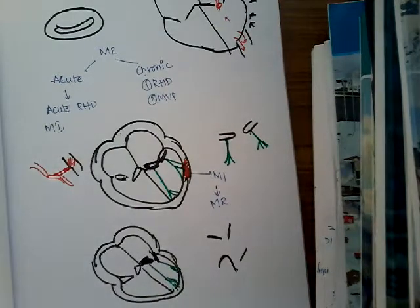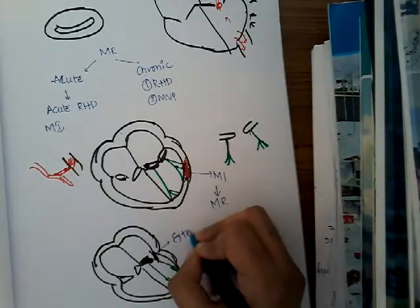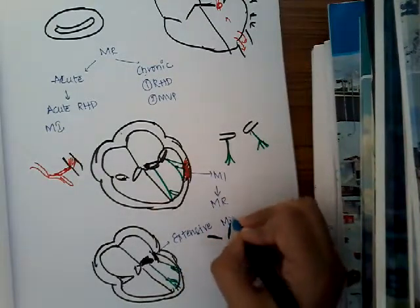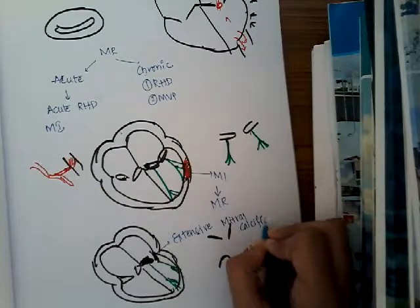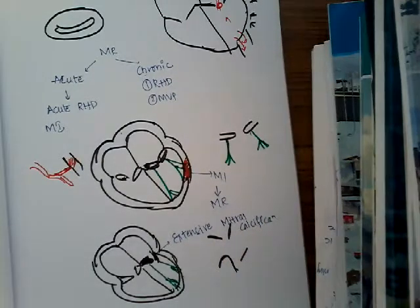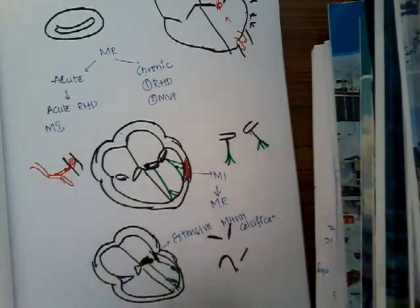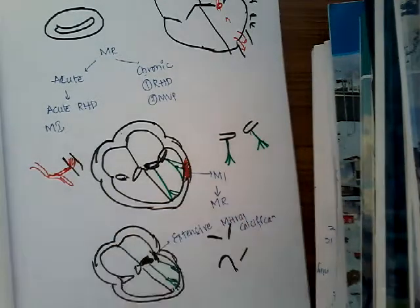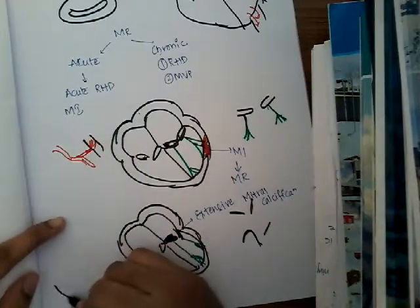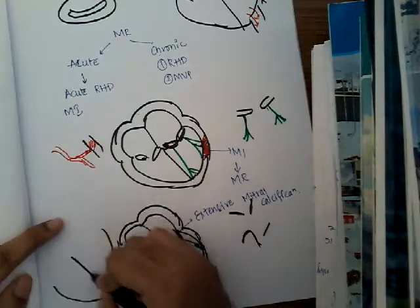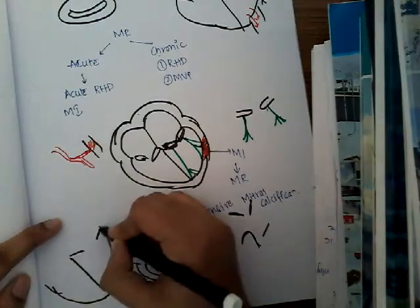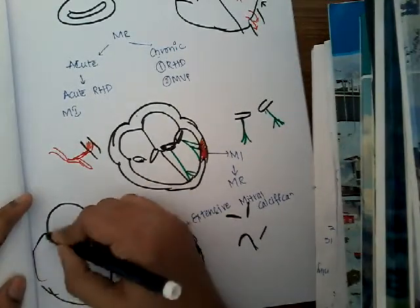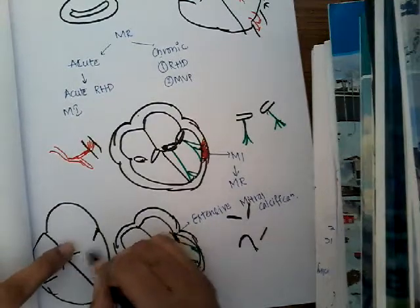Another chronic cause is extensive mitral valve calcification. When the mitral valve is completely calcified it cannot move, so it cannot close properly — this is one cause of mitral regurgitation. Additionally, dilatation of the ventricles can dilate the mitral valve opening, also resulting in mitral regurgitation. When the ventricles dilate, the mitral valve annular ring dilates and the leaflets can no longer come together to close properly.